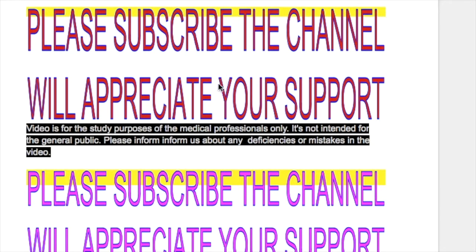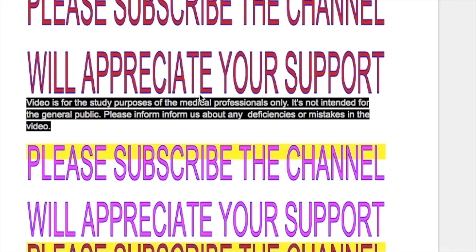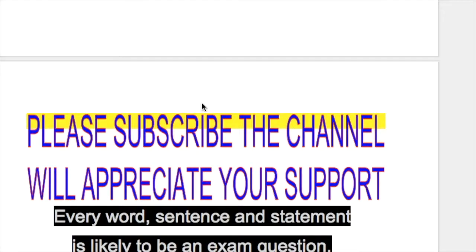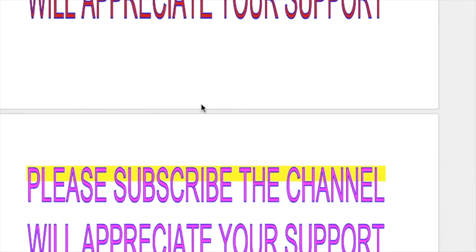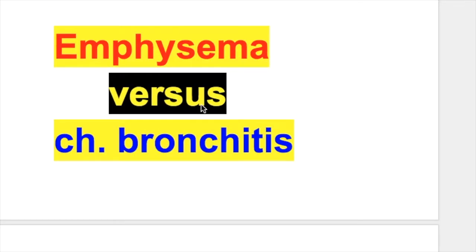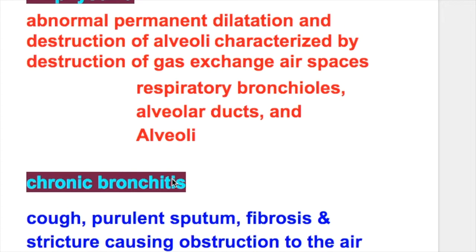In this video we'll compare the two disorders chronic bronchitis and emphysema. Both of them are chronic obstructive pulmonary diseases and they coexist together. Features of emphysema are in red color and the features of chronic bronchitis are in blue color. In emphysema there is abnormal permanent dilatation and destruction of the alveoli, characterized by destruction of gas exchange air spaces — that is respiratory bronchioles, alveolar ducts and alveoli.